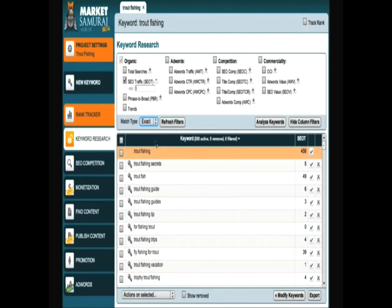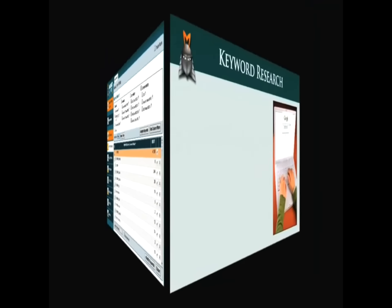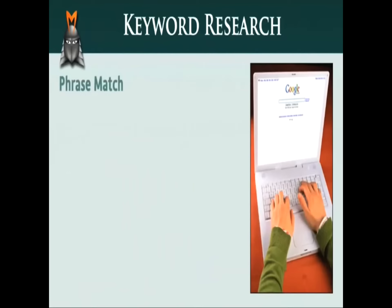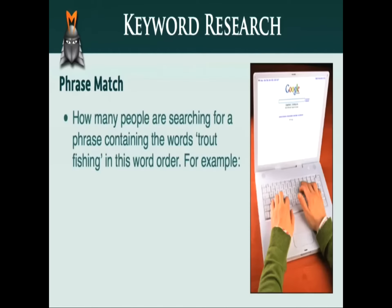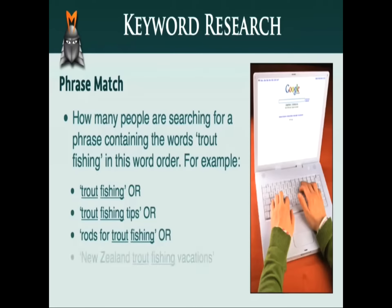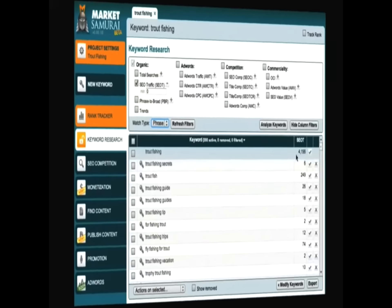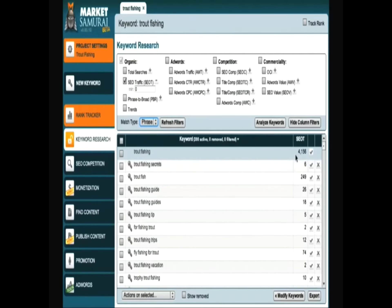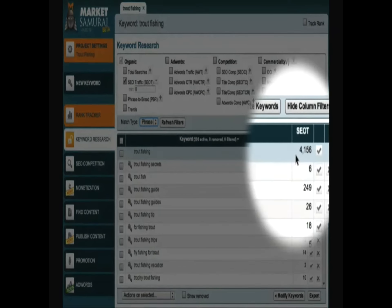Now let's consider what happens when we set the match type to Phrase Match. When we set the match type to Phrase Match, the SEO figure now relates to how many people are searching for a phrase containing the words Trout Fishing in this specific word order. For example, this would include people searching for phrases such as Trout Fishing, Trout Fishing Tips, Rods for Trout Fishing, or even New Zealand Trout Fishing Vacations and many other variations. In this example, 4,156 people per day are searching for a phrase that contains the words Trout Fishing in that order along with some other keywords.